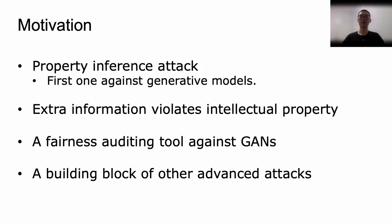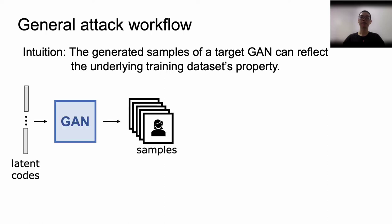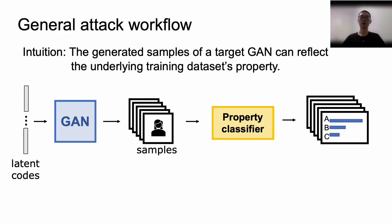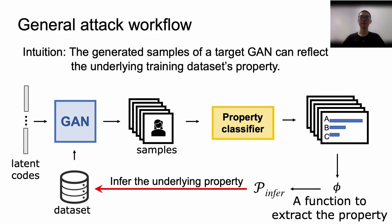Moreover, this attack can be a stepping stone to perform more advanced attacks, such as membership inference attacks. As the generated samples of a GAN can reflect its underlying training dataset's property, we design a general attack pipeline including three steps. Firstly, we choose the target GAN to produce some samples. We may generate samples randomly or according to specific latent codes. Secondly, we construct a property classifier to analyze the generated samples. The mission of the classifier is to get the possibility of a sample having the target property. Thirdly, we use an aggregation function to extract the property inference result, and in this way we can infer the underlying property of the target dataset.